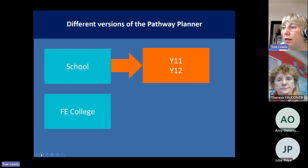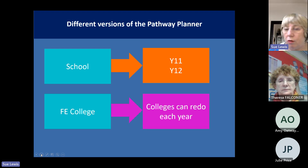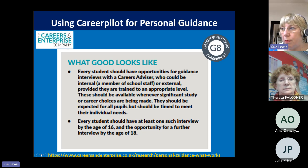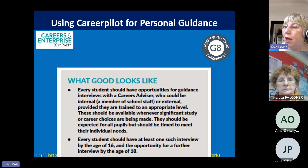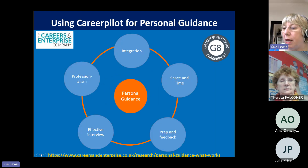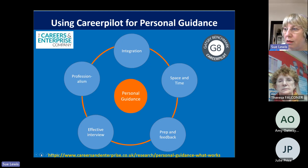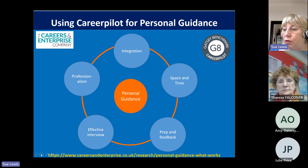In schools there are different versions — Year 11 and 12, and also a college version. When we put our bid to the Careers and Enterprise Company, we had to come up with an idea to meet Gatsby 8 — a guidance session before 16 and another opportunity before 18. We also had to show how our idea met the criteria of effective guidance from the CEC research report 'Personal Guidance — What Works,' covering things like integration with school activity, appropriate timing, a preparation element, feedback after the interview, and delivery by someone with a Level 6 qualification.